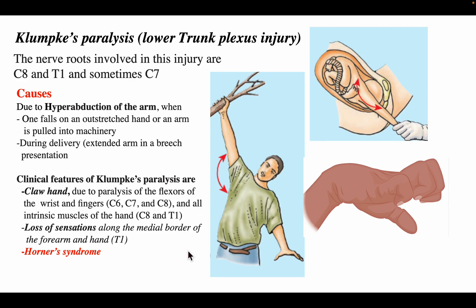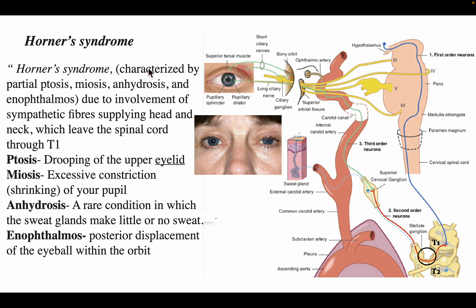Horner's syndrome is characterized by partial ptosis, miosis, anhidrosis, and enophthalmos, due to involvement of sympathetic fibers supplying the head and neck, which leave the spinal cord through the T1 segment. The first order neuron (shown in blue) arises from the hypothalamus and runs along the brainstem to the spinal cord. The second order neuron (red) arises and passes through the T1 spinal segment.